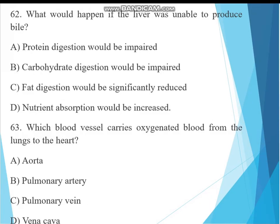Question 62. What would happen if the liver was unable to produce bile? A. Protein digestion would be impaired. B. Carbohydrate digestion would be impaired. C. Fat digestion would be significantly reduced. D. Nutrient absorption would be increased. The liver produces bile, so fat digestion would be significantly reduced.